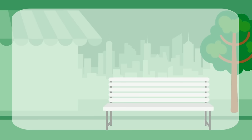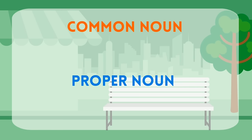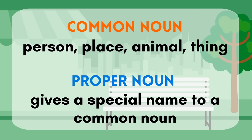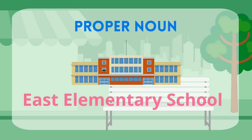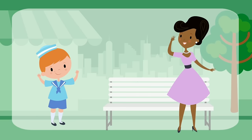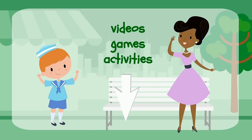I hope you now understand the difference between a common noun and a proper noun. Remember that a common noun is a person, place, animal, or thing, and a proper noun gives a special name to a common noun. One more thing to remember: capitalize the first letter of every word in a proper noun. Check out the description below for more videos, games, and activities about proper nouns.